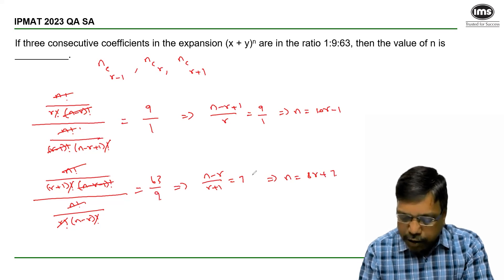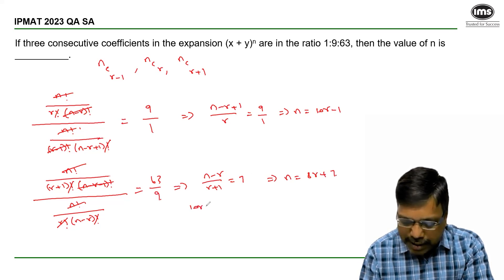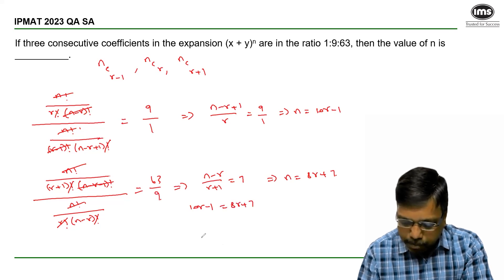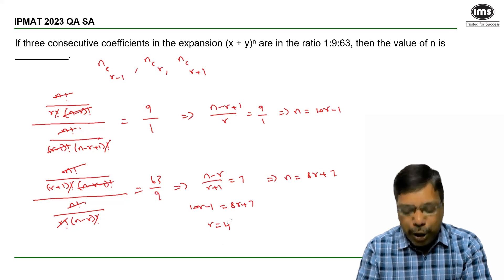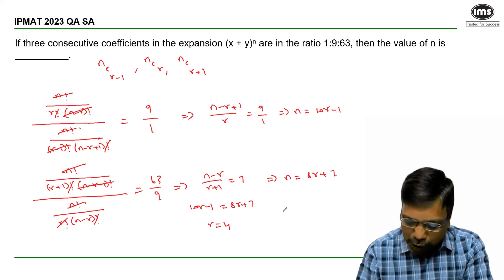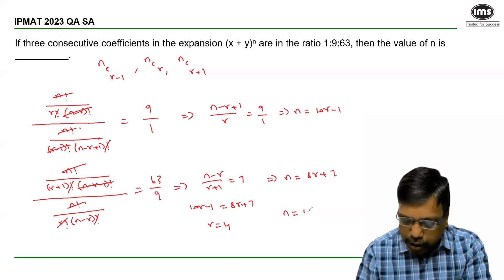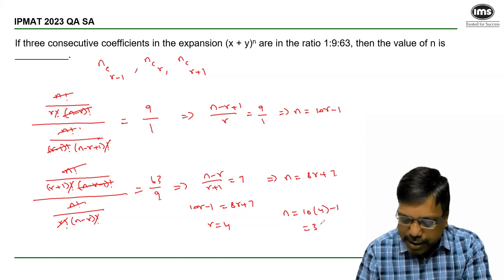Equating the value of n in both cases: 10r - 1 = 8r + 7, giving r = 4. Substituting r = 4, we get n = 10 × 4 - 1, that is 39.